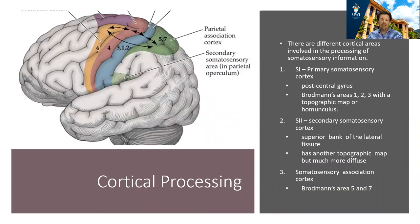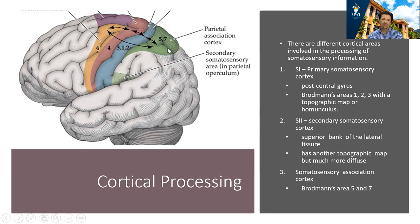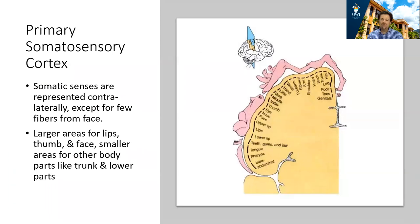Let's conclude by talking about cortical processing — what areas of the brain process the sense of touch. There are three areas to discuss. The primary somatosensory cortex is found in the post-central gyrus, shown in light blue, known as Brodmann's areas 1, 2, and 3. The secondary somatosensory cortex is found on the superior bank of the lateral fissure. And then you also have the somatosensory association cortex, found behind the primary somatosensory cortex in Brodmann's areas 5 and 7.